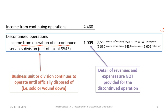In our example, we continue to operate the services division and it generated a pre-tax profit of $1,550,000 at a 35% tax rate. That gives us a tax expense of $543,000, and we are reporting on a net of tax basis. The proper disclosure shows in parentheses how much the tax impact is, and the result on an after-tax basis is $1,009,000. Note that no detail of revenues and expenses is provided in the discontinued operations section — we don't need to provide the sources of revenues and expenses once an operation has been classified as discontinued.